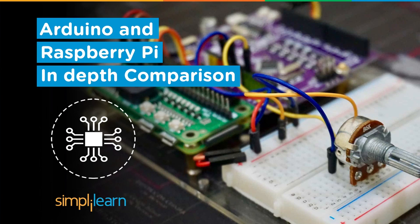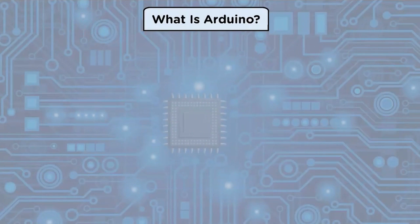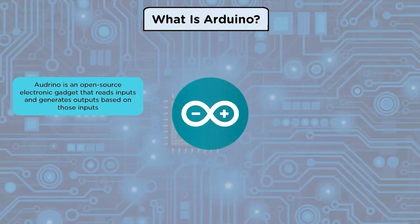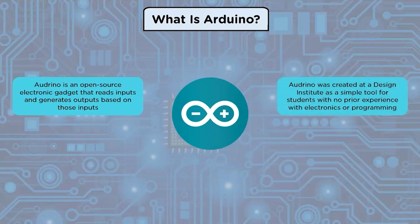So without any further ado, let's get started. What is Arduino? Arduino is an open source electronic gadget that treats input such as light on a sensor, a finger on a button, or a tweet, and generates output based on those inputs such as turning on an LED or activating a motor. Arduino was created at a design institute as a simple tool for students with no prior experience with electronics or programming.